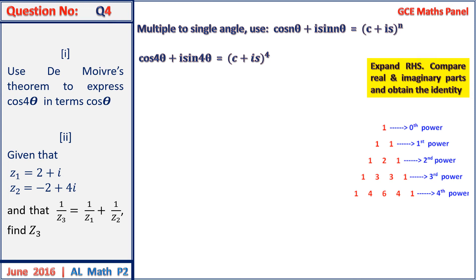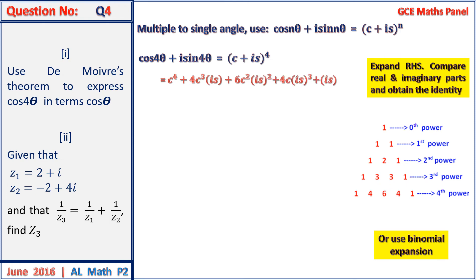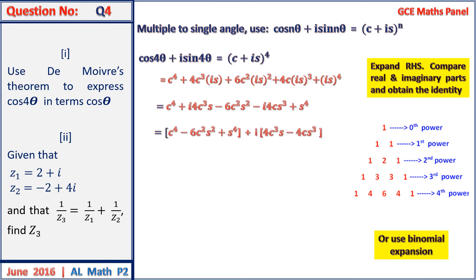Expanding gives cos to the power 4 plus i times 4 cos cubed sin theta minus 6 cos squared sin squared minus i times 4 cos sin cubed plus sin to the power 4. Collecting real and imaginary parts, cos 4 theta equals the real part, which is cos to the power 4 minus 6 cos squared sin squared plus sin to the power 4.